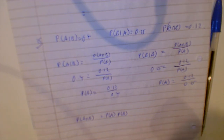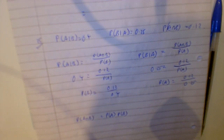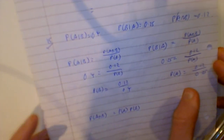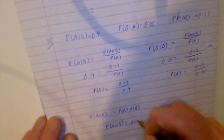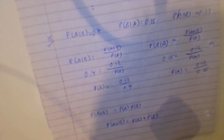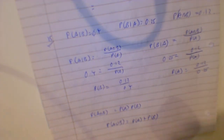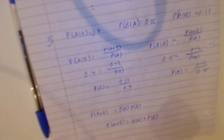One more thing to cover: mutually exclusive events. Mutually exclusive means P(A ∪ B) equals P(A) plus P(B) - there's no intersection. A union B means A or B. I'll put up something from YouTube with examples of mutual exclusivity so you'll understand it a little better.